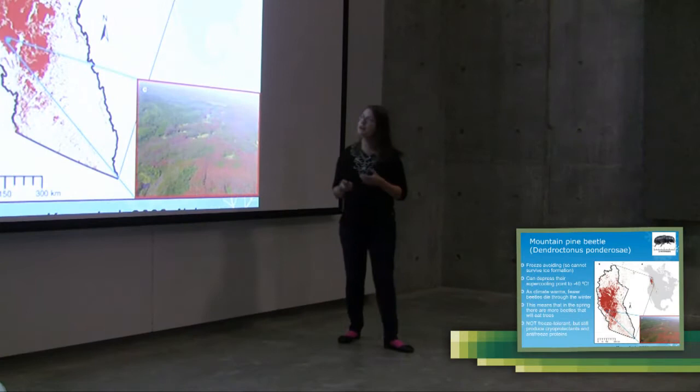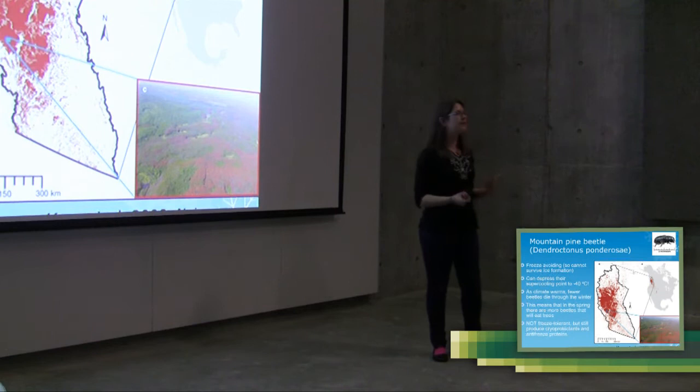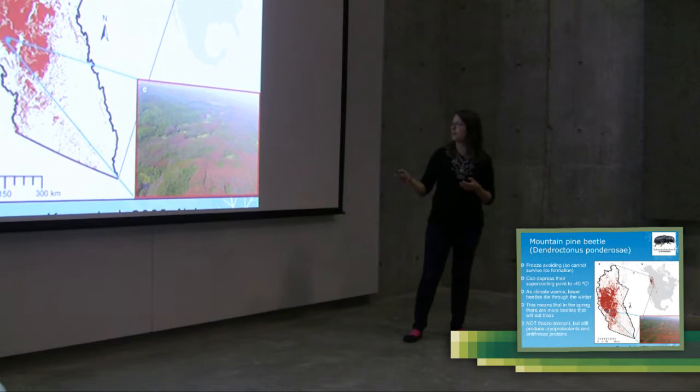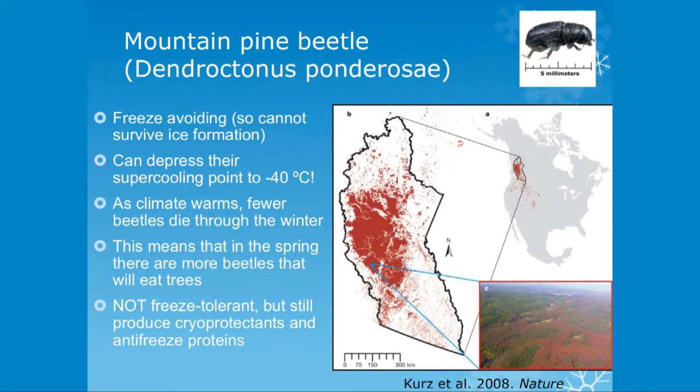Another animal you may have heard of is the mountain pine beetle. This is obviously a really important pest species here in BC. So I've plotted some of the outbreak locations of the pine beetle. Here, you can see it produces vast areas of dead trees because it's consuming those trees. And it turns out understanding the cold tolerance of this pine beetle is really important for understanding how the pine beetle populations and outbreaks might change with a change in climate.